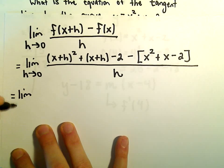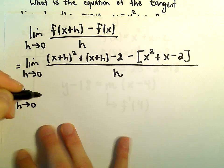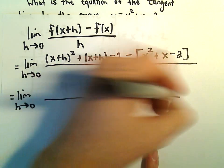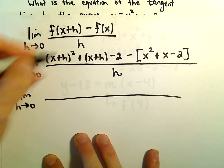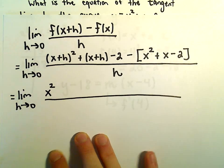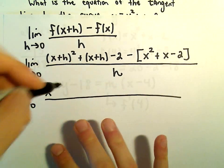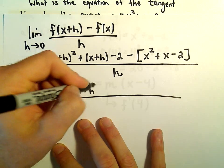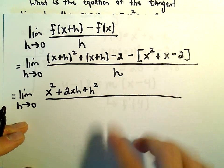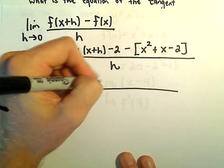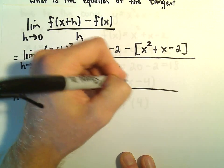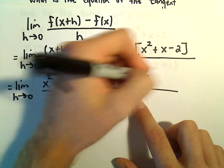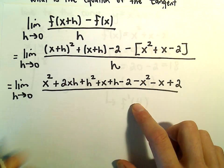So we've got the limit as h goes to 0. We've had to do x plus h squared. You would have to distribute that out, so we would get x times x or x squared. We would get an x times an h and another x times h. So we would get 2xh, then plus h squared. And now I'm just going to remove the parentheses from everything else. So we would get plus x plus h minus 2. When we distribute the negative, we'll get negative x squared minus x and then plus 2.